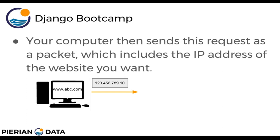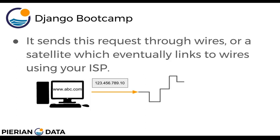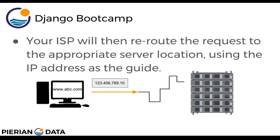Your computer sends this request as a packet which includes the IP address of the website you want. The IP address allows servers to identify what website you're looking for, and it sends this request through wires or a satellite which eventually links to wires using your internet service provider. If you're at home, your request is sent through copper wires or optic fiber wires. At a very basic level, the internet is essentially just wires connecting computers with some sort of protocol. Your ISP then reroutes the request to the appropriate server location using the IP address as the guide.